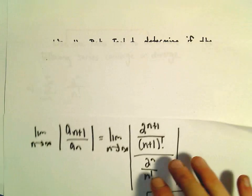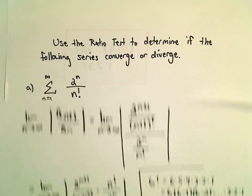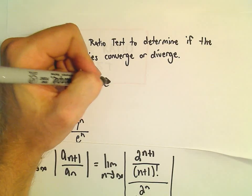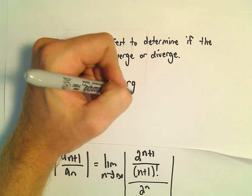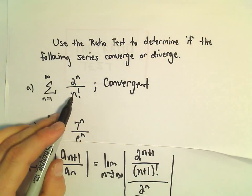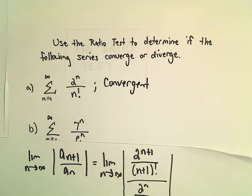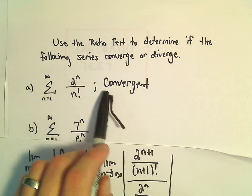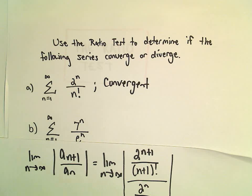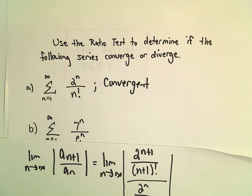So part A, we've got a nice example here of a convergent series. Almost any time I see factorials in a series and they want me to decide if it converges or diverges, I almost always jump immediately to the ratio test. Very useful little test.